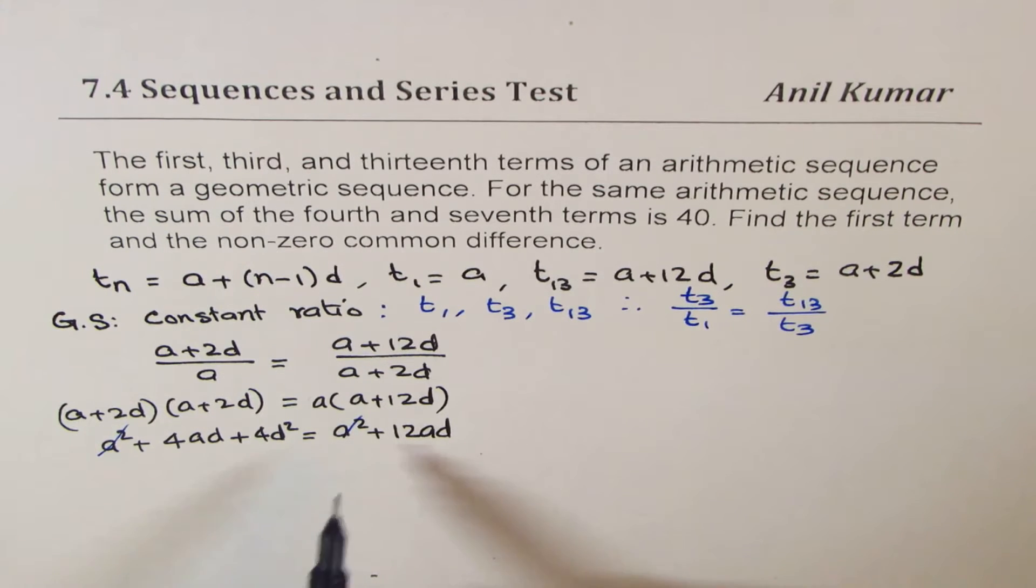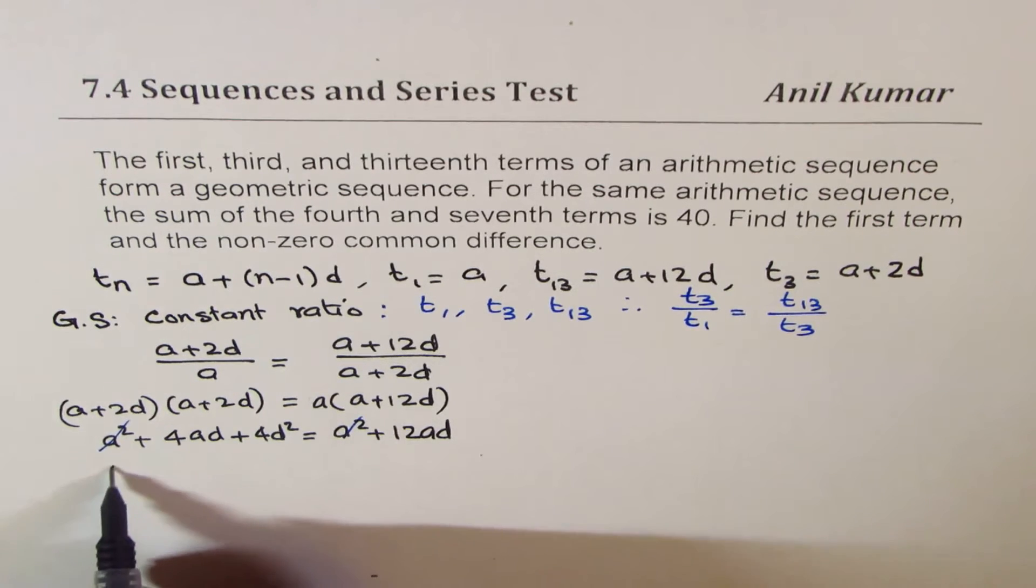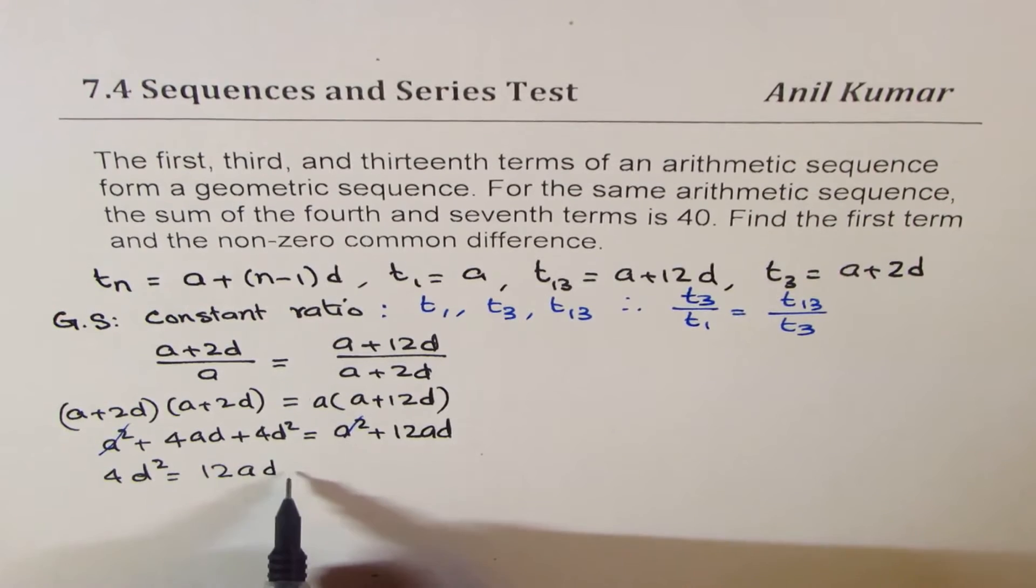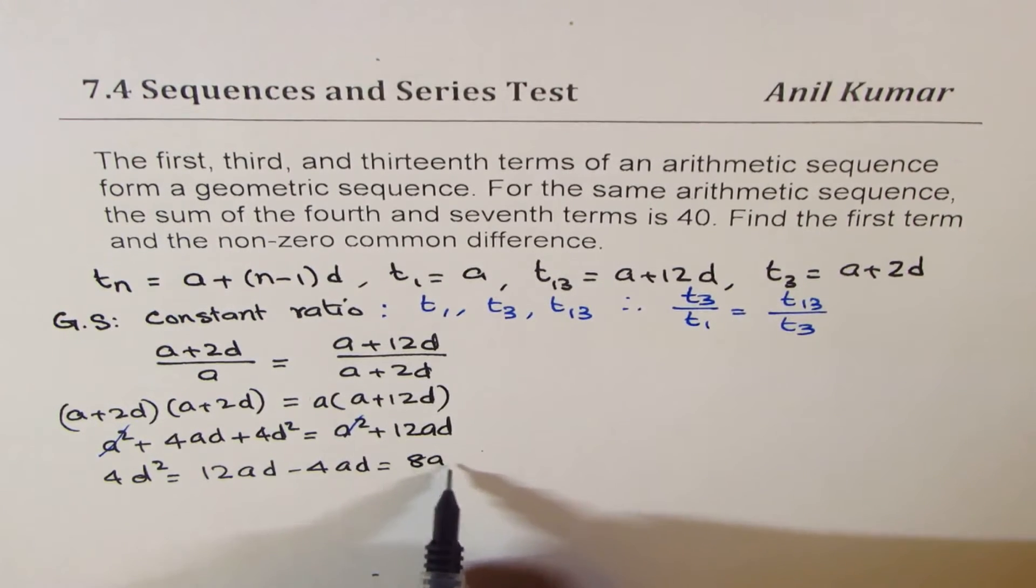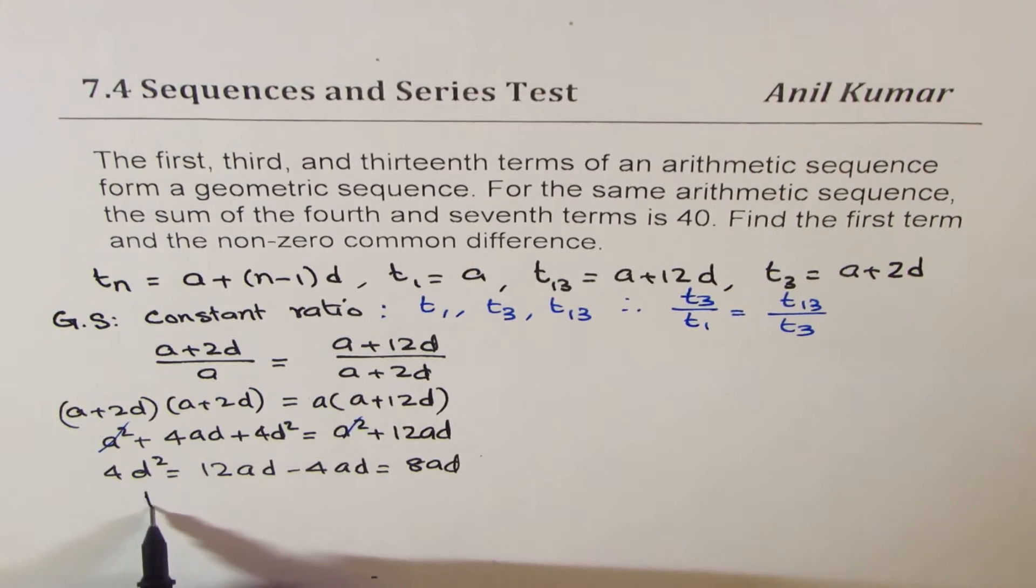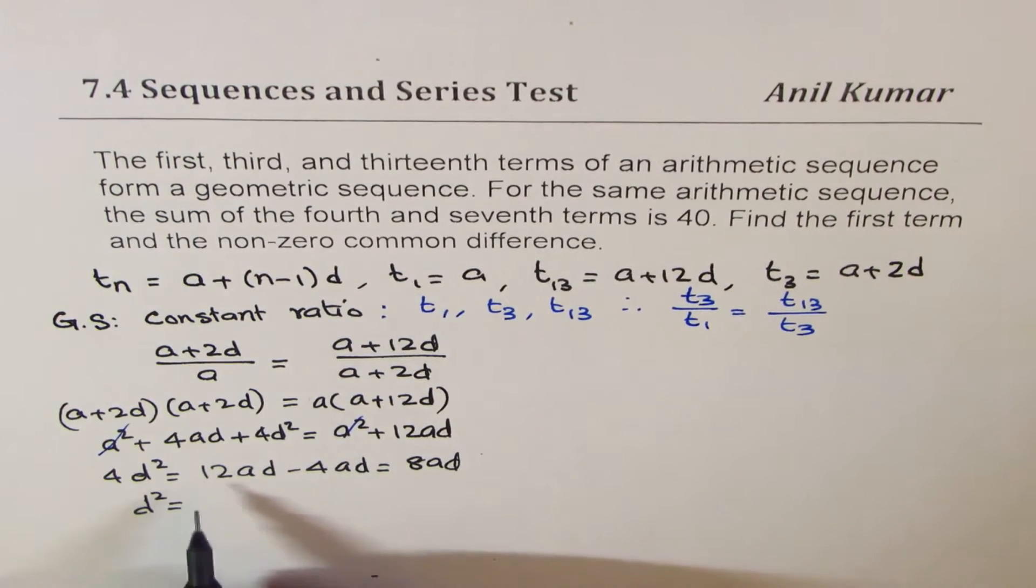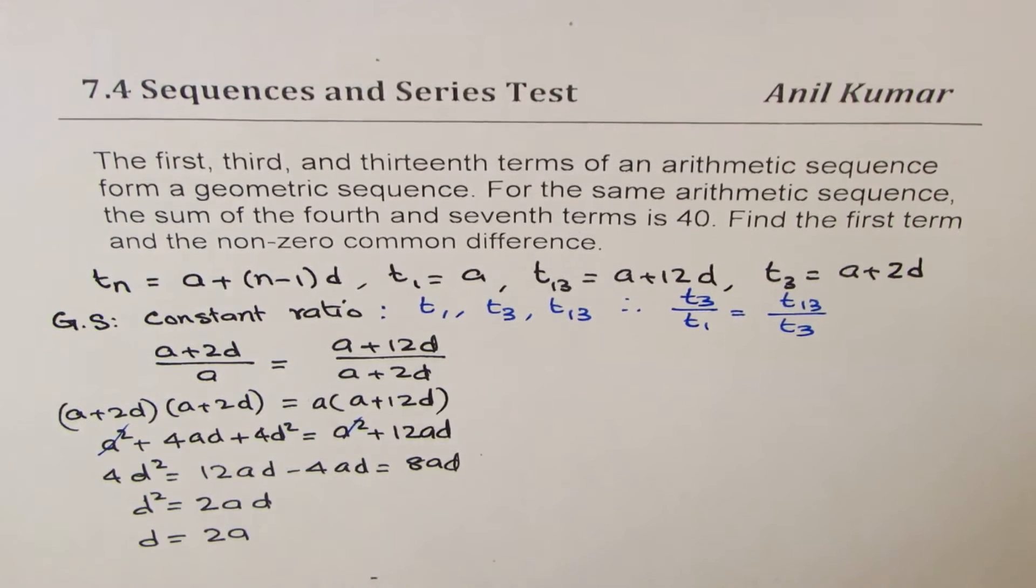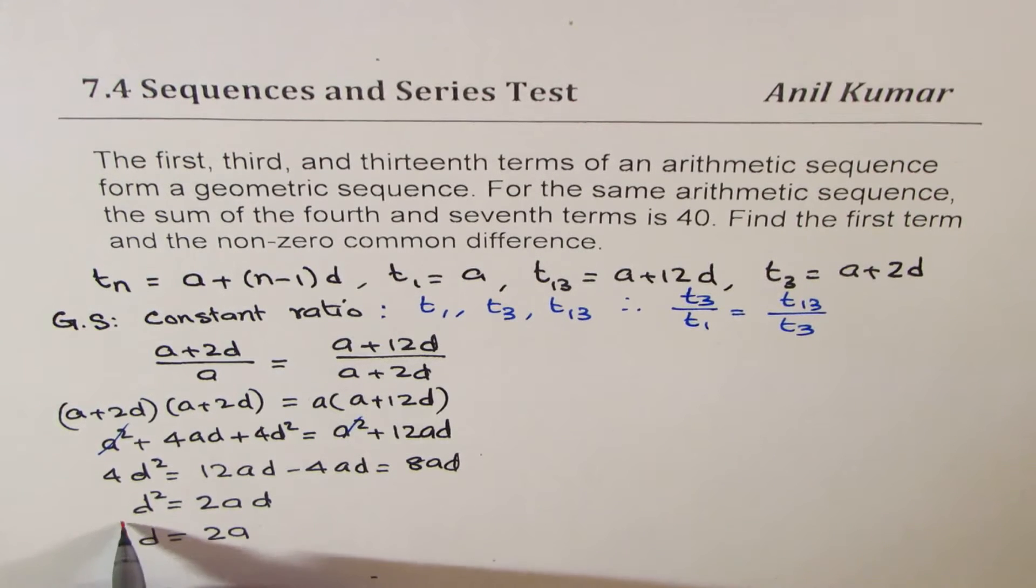Now a squared and a squared cancel, and we can simplify this and get one equation. So we get 4d squared equals to 12ad minus 4ad, which is 8ad. Dividing by 4, I get d squared equals to 2ad, and d can cancel, so we get d equals to 2a. So that becomes one of our equations: d equals 2a.